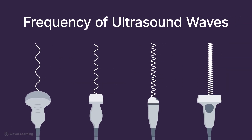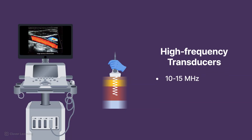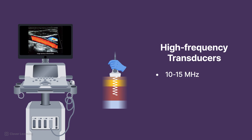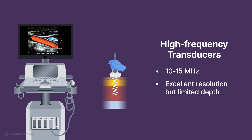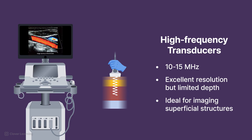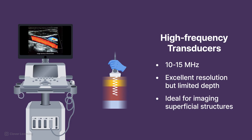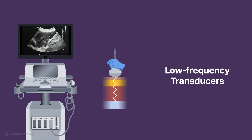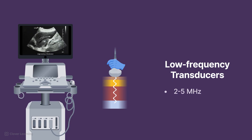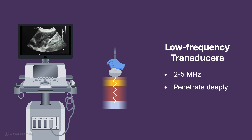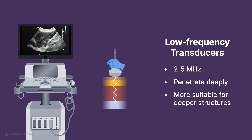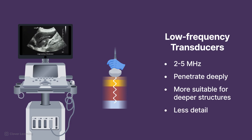It's also important to understand how the frequency of the ultrasound waves affects image quality and depth. High-frequency transducers, such as 10 to 15 MHz, produce images with excellent resolution but are limited in how deeply the sound waves can penetrate. These are ideal for superficial structures like the thyroid, breast, or musculoskeletal tissues. Low-frequency transducers, such as 2 to 5 MHz, penetrate more deeply, making them suitable for deeper structures like the liver, kidneys, or fetus in later stages of pregnancy, though with less detail.